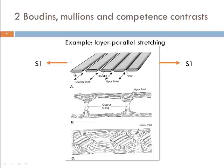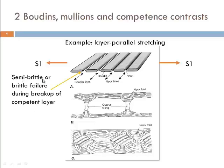If we have a layered sequence of rocks with different competence, for instance an interlayering between gneiss layers and amphibolite layers, rheological contrasts during deformation produce characteristic structures. One important structure type that requires competence contrasts are Boudins. This is what Boudins look like when layer-parallel extension is happening. We see semi-brittle or brittle failure during the breakup of a once coherent highly competent layer, forming these rod-like structures separated by linear gaps, which we call Boudin lines or neck lines — these terms are synonymous.